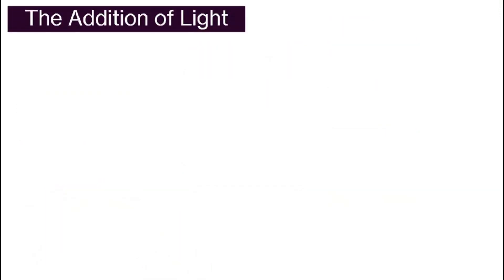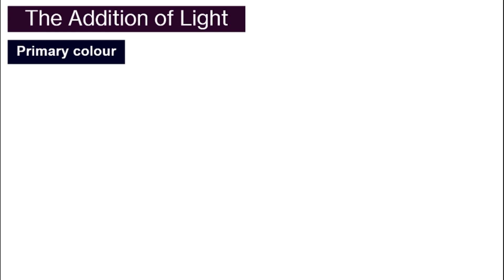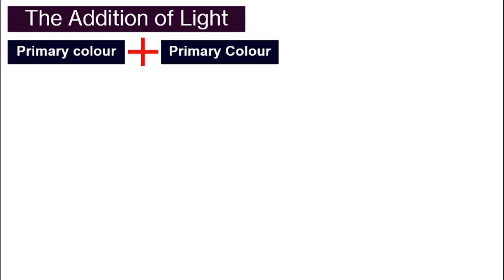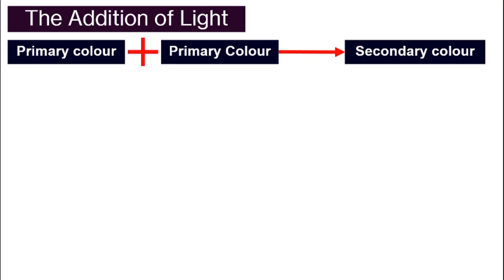What is the addition of light? The addition of light simply means that we take one primary color light and add it to another primary color light, and they will produce a secondary color light.